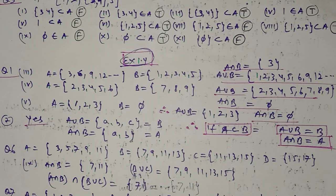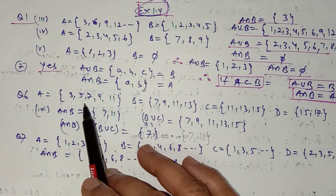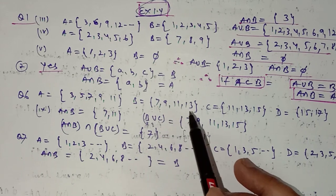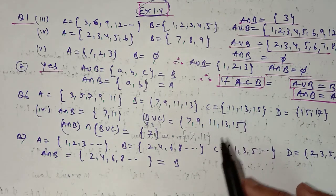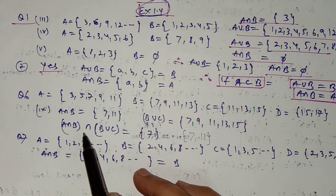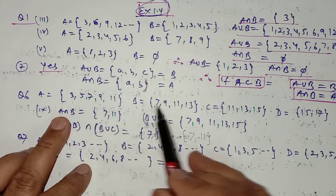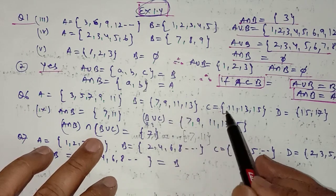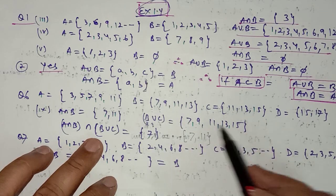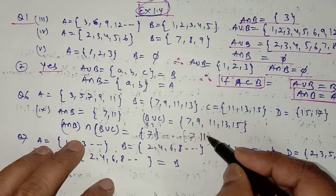In question number 6, set A is {3,5,7,9,11}, set B is {7,9,11,13}, set C is {11,13,15}, and set D is {15,17}. Taking the ninth part, you have to find (A intersection B) intersection (B union C). First find A intersection B: common elements of A and B are {7, 11}. Then find B union C: total elements of B and C are {7,9,11,13,15}. The intersection of these two results is {7, 11}.